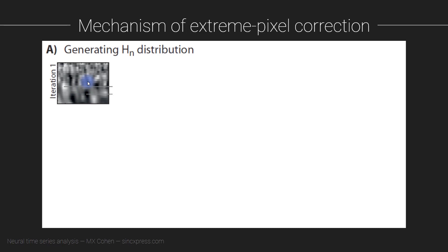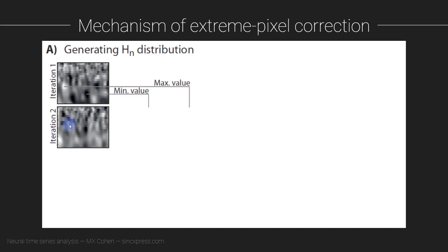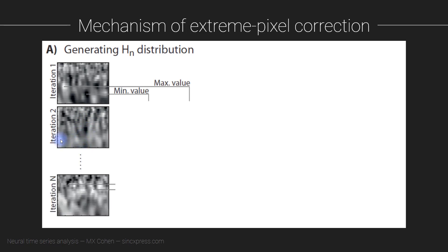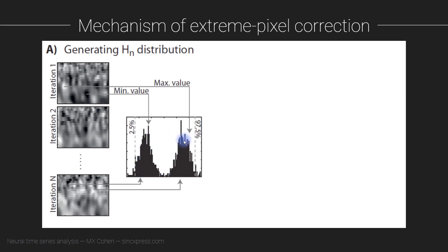Then we go to the second iteration — the second null hypothesis map — and do exactly the same thing: find the largest pixel and the smallest pixel, the most extreme positive and most extreme negative values. We repeat this for all the maps, building up a distribution. That distribution is going to be bimodal, with zero in the center — all of the extreme negative values on one side and the extreme positive values on the other side, over our n iterations, perhaps 1000 permutations.